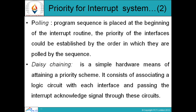After that, DC chaining. It is a simple hardware means of attaining a priority scheme — एक simple hardware mechanism होते हैं जिसके through हम priority assign कर सकते हैं different interrupts को। It consists of associating a logic circuit with each interface and passing the interrupt acknowledge signal through these circuits. इसमें हम different logic circuits को attach कर देते हैं different interfaces से, जिससे हमें acknowledgement signal receive होते हैं।